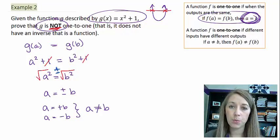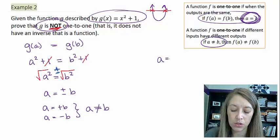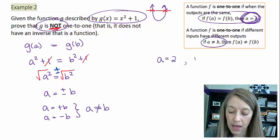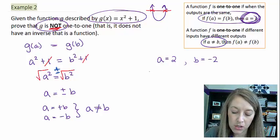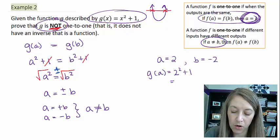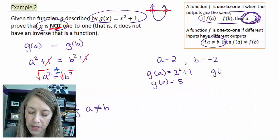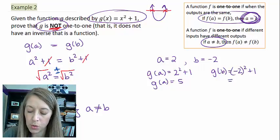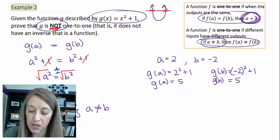Or, if you wanted to prove this a different way, you can pick two a and b values. So, let's just say that a is equal to 2, and b is equal to negative 2. And if I plug both of those into the function, so if I do g of a, that gives me 2 squared plus 1, or 4 plus 1, which is 5. Or, if I do g of b, which is negative 2 squared plus 1, negative 2 squared is positive 4, plus 1 equals 5.